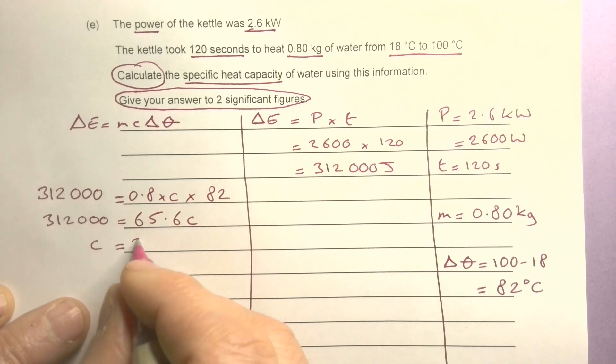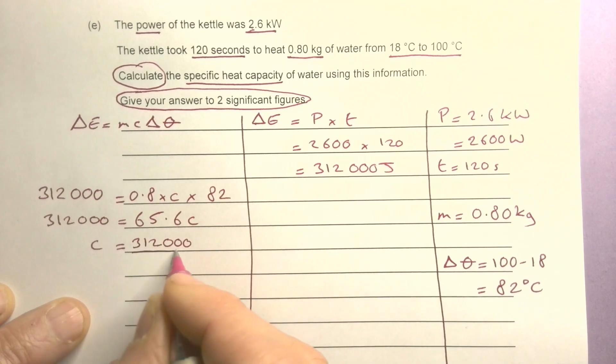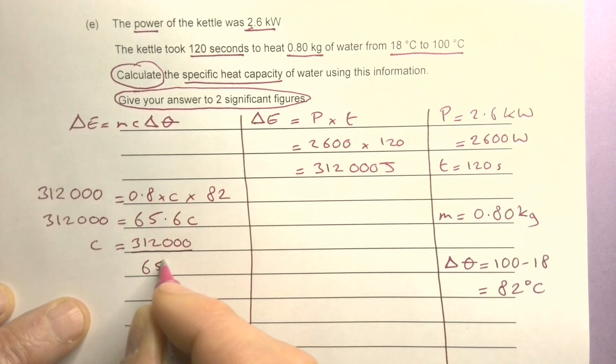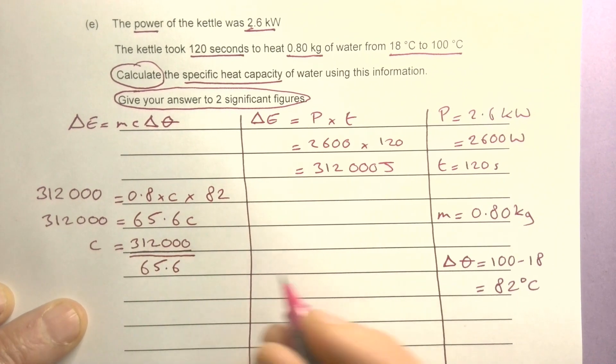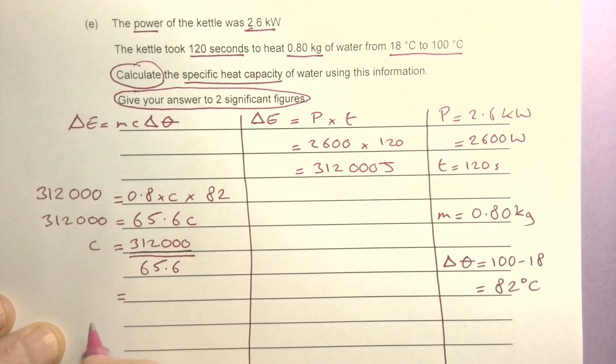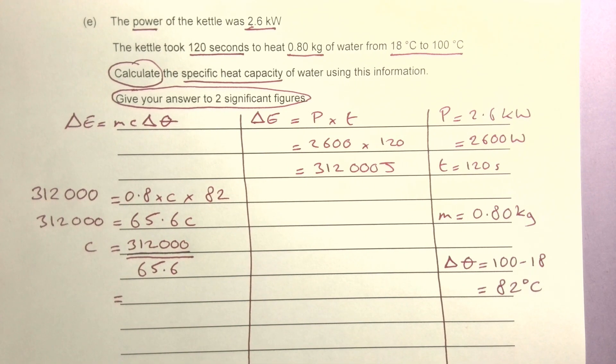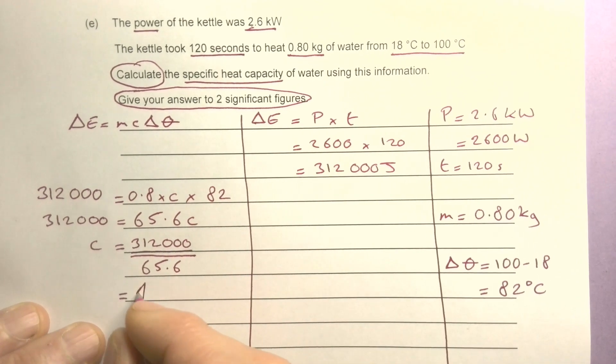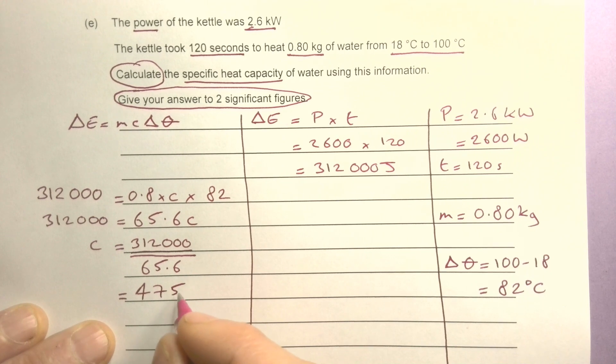So it's 65.6c equals 312,000. So c equals 312,000 divided by 65.6, which equals 4,756.